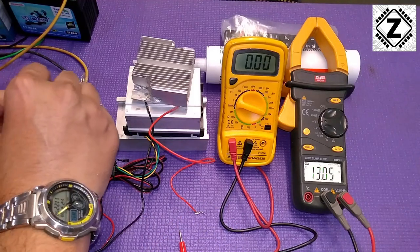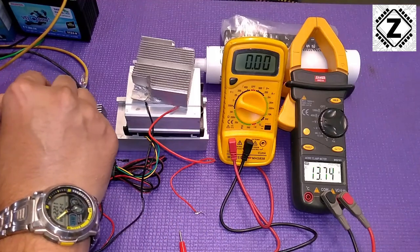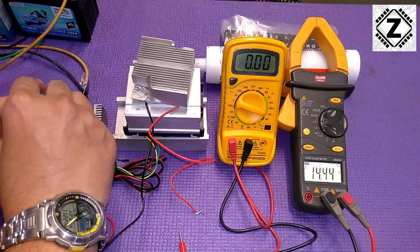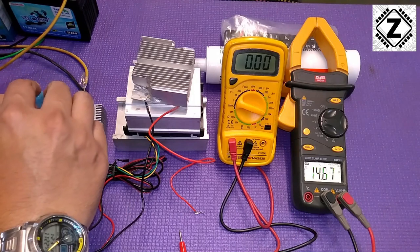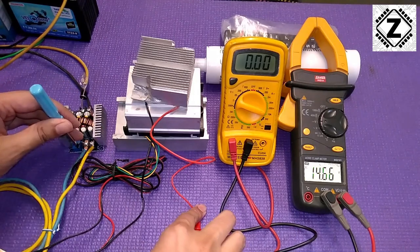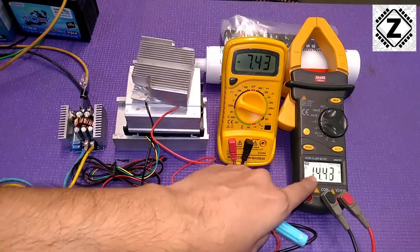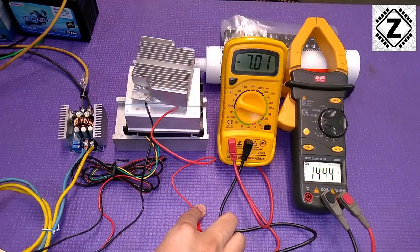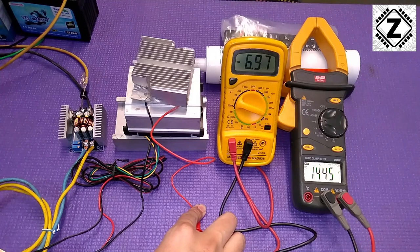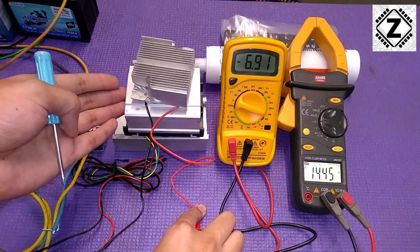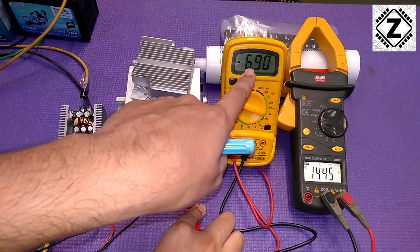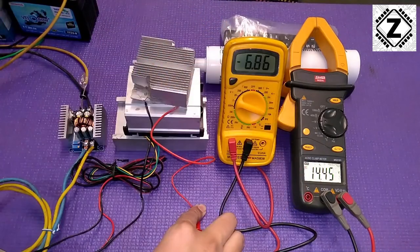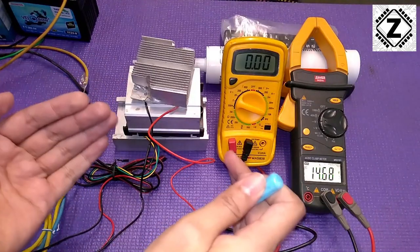Let's go higher to 14.4 volts, which is the end of charge voltage for solar or inverter batteries. At 14.4 volts it started with 7 amps and is dropping down. With better cooling on the hot side, say a water block, this would have stood at 7 amps. We're seeing 6.9 or 6.8 amps at 14.4 volts.